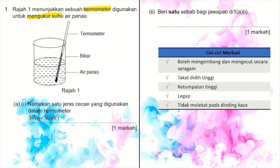Untuk soalan 1A2, murid-murid boleh memilih salah satu daripada ciri-ciri yang telah disenaraikan. Untuk soalan nombor 2, cikgu minta awak bandingkan perbezaan di antara soalan nombor 1 dan soalan nombor 2.